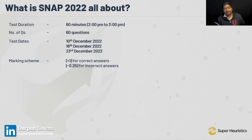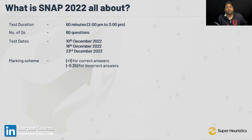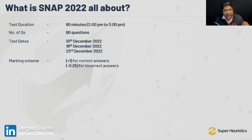So while in CAT you had a 33% negative weightage, in SNAP you have it at 25%, which is lower. Hence, probably attempting more in SNAP makes much more sense. Now what I'll be sharing with you is something interesting — why probably SNAP is the easiest exam out there. And I'll explain it to you all from data, all from logic.